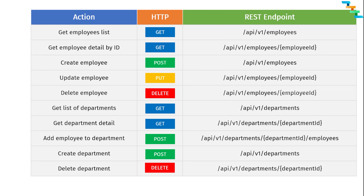Now we'll create an employment management application with TypeSpec. Before diving deep, let me give a very high-level overview of the different APIs this application has. It has two main divisions: one is to maintain employees, and one is to maintain departments. For employees, we will have: get employees list (with pagination), and get employee detail by ID.